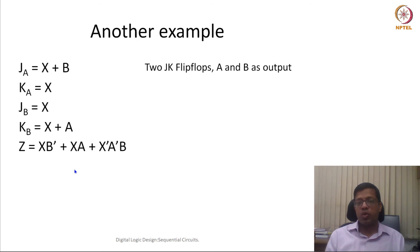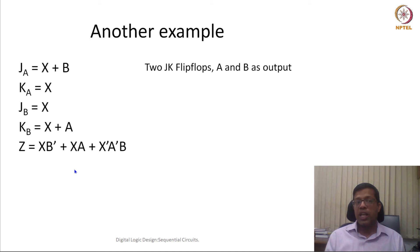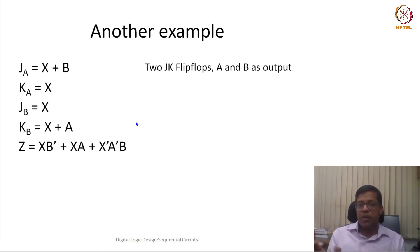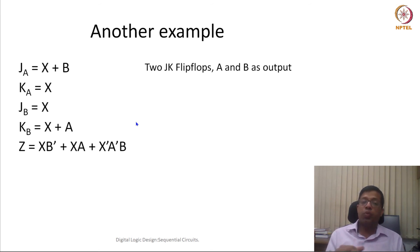Let us take another example. In this example we also have two flip flops, but to make things more diverse we use JK flip flops. For flip flop A, JA and KA are the inputs; for flip flop B, JB and KB are the inputs. The output depends on both A, B as well as the value of X.